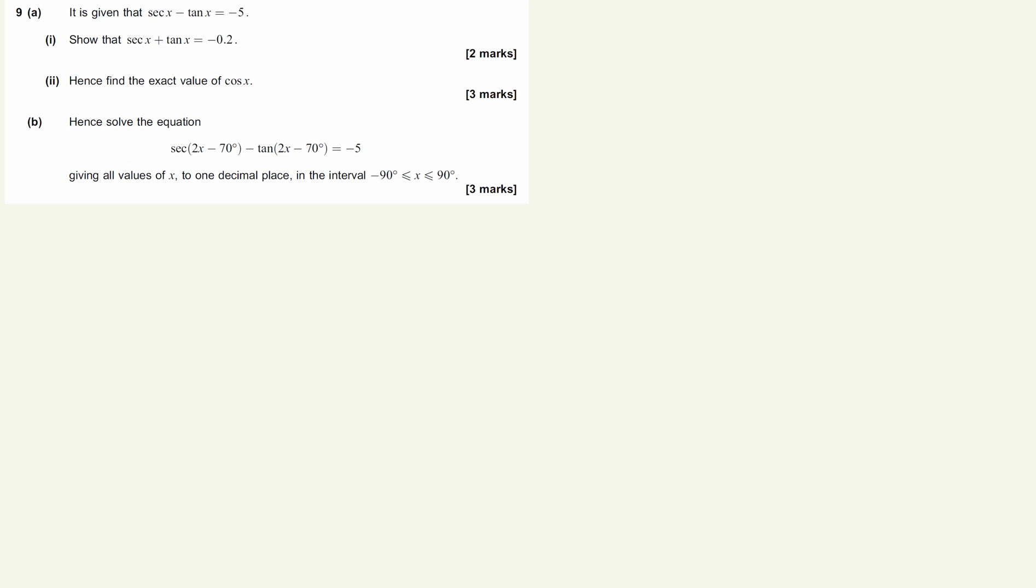We're given a trig identity here, and we're being asked to use the fact that sec x minus tan x equals minus 5 to show what would happen when we get sec x plus tan x.